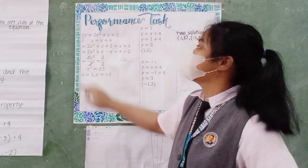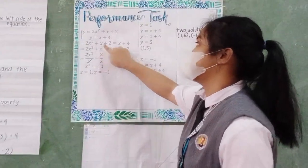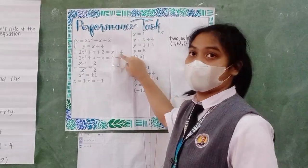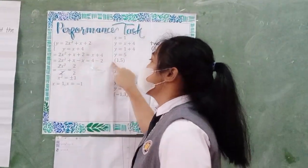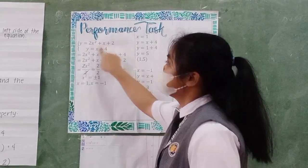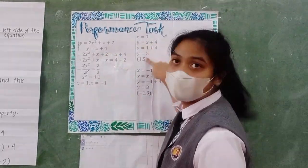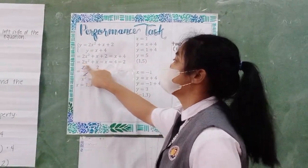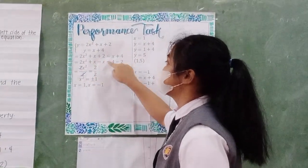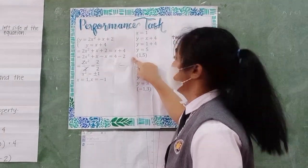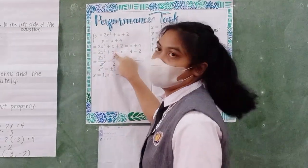So to find the value of x, we can say that 2x² + x + 2 equals 2x + 4. We have to transpose the x on the left side and the 2 to the right side. So 2x² + x - x equals 4 - 2. That would give us 2x² equals 2.